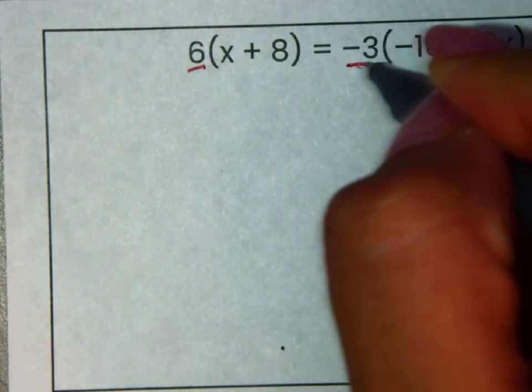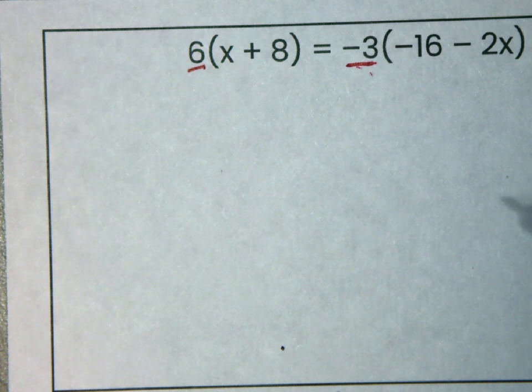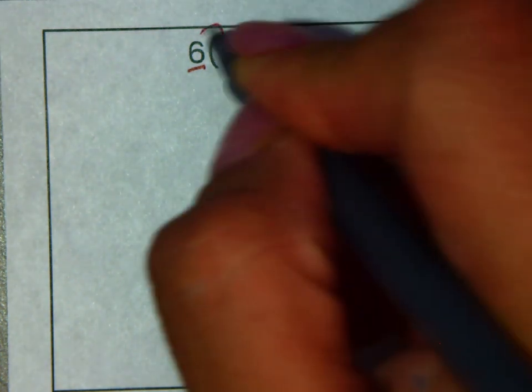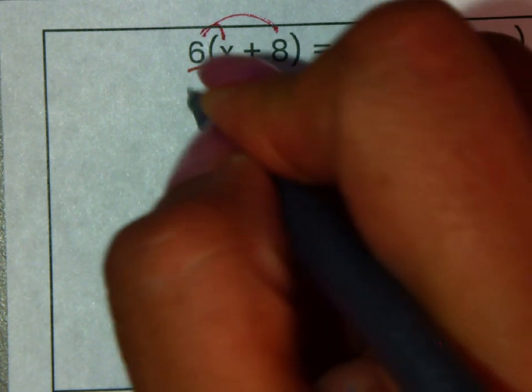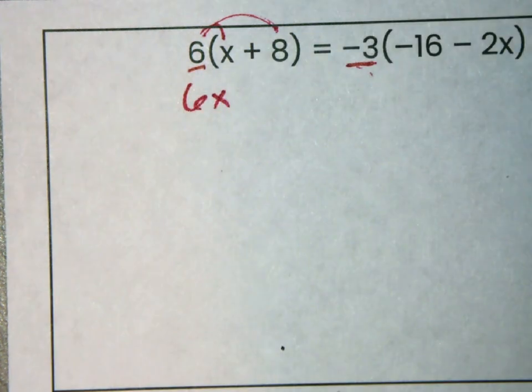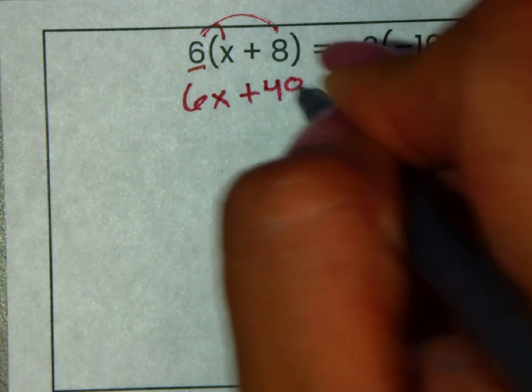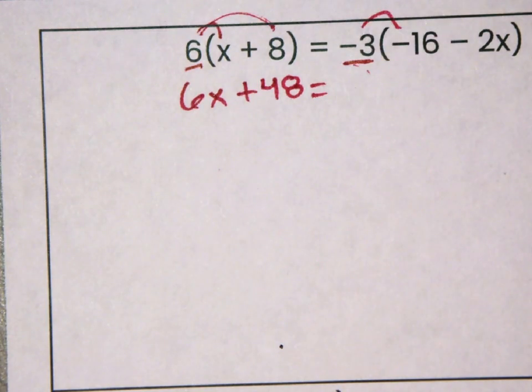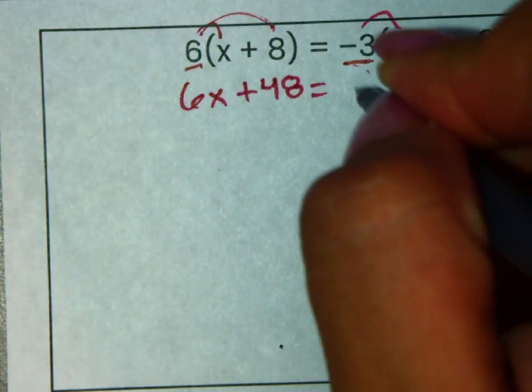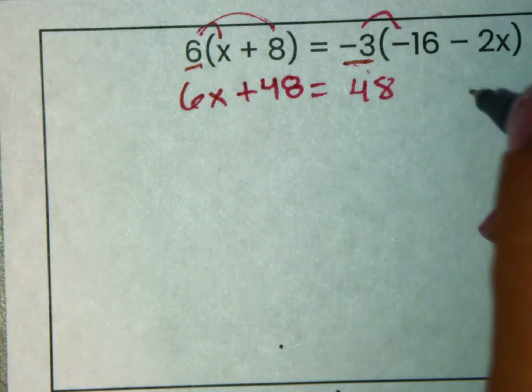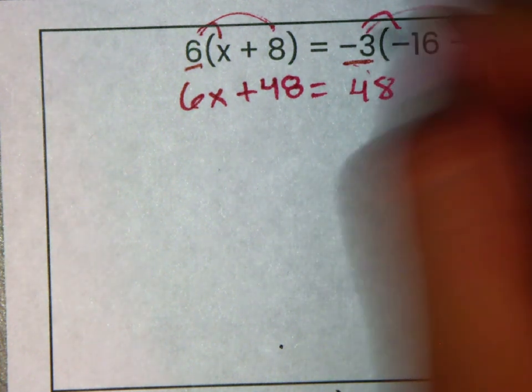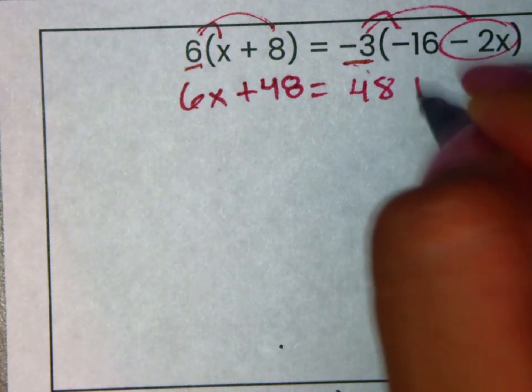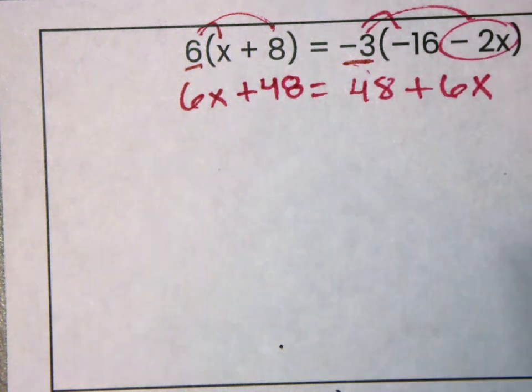Anytime you have parentheses, you want to distribute the number next to that parentheses. So you're going to multiply 6 times x and then 6 times 8. 6 times x is 6x, 6 times 8 is 48, so we're going to have plus 48. On this side, we're going to have negative 3 times negative 16, and that answer is positive 48 as well. And then negative 3 times negative 2x, that will be positive 6x.